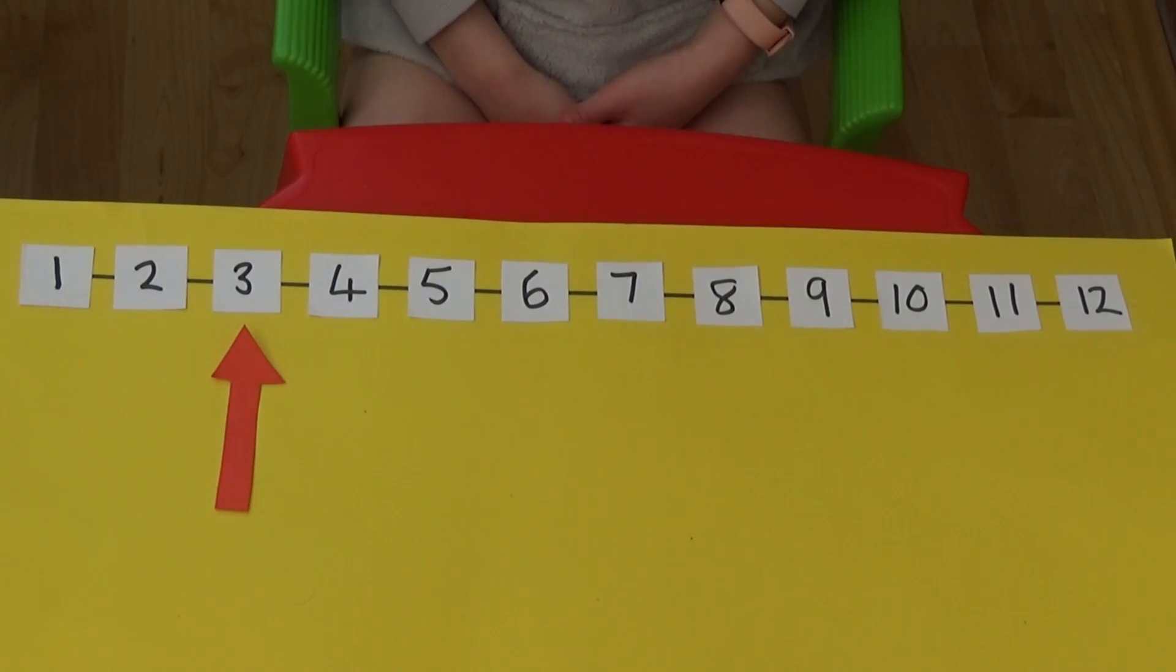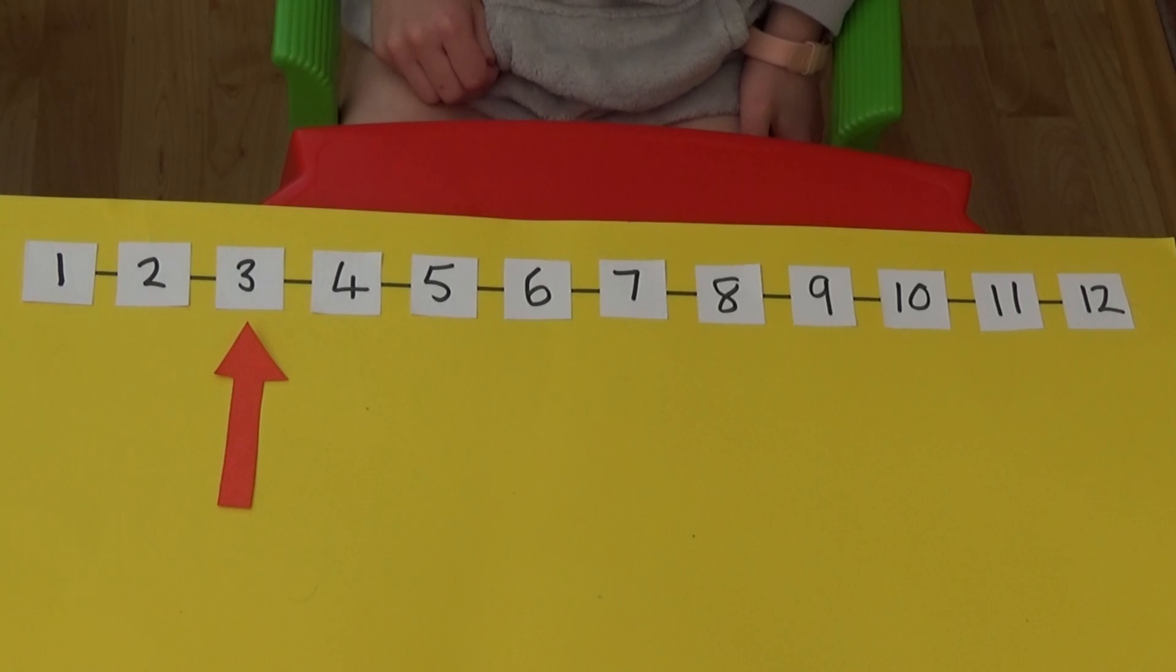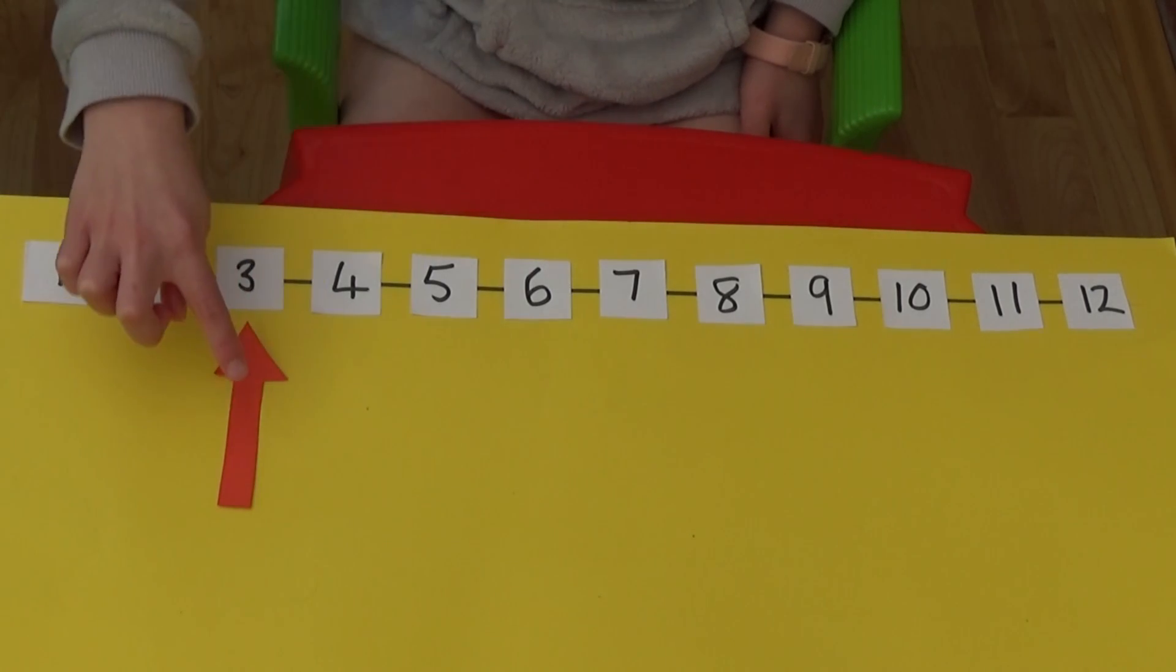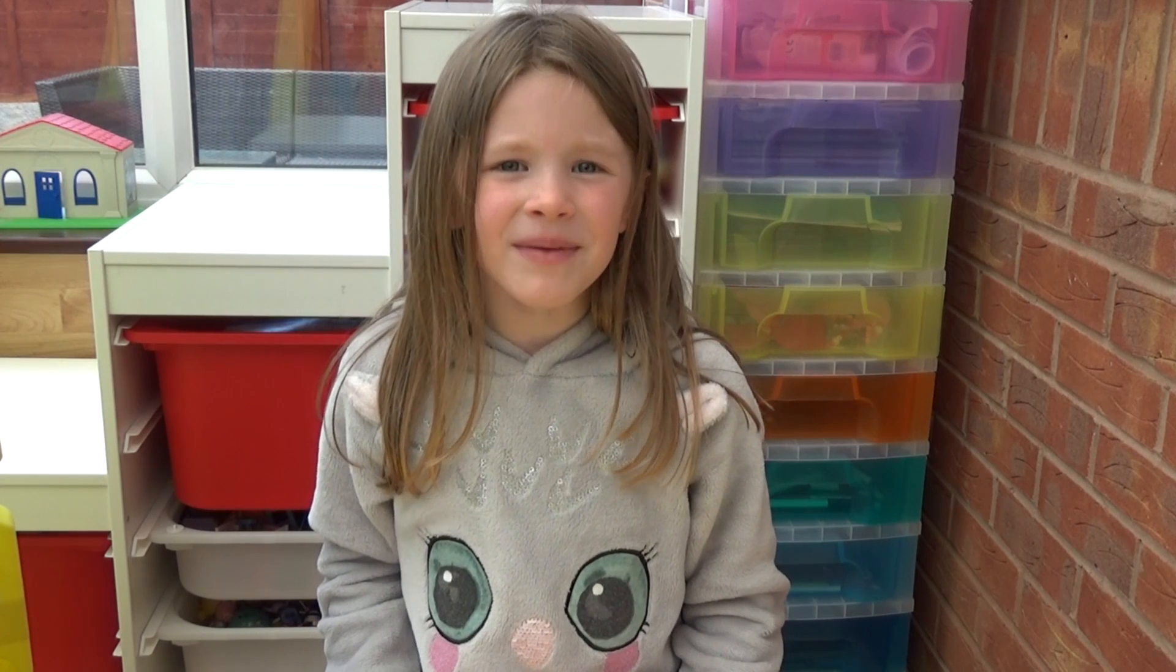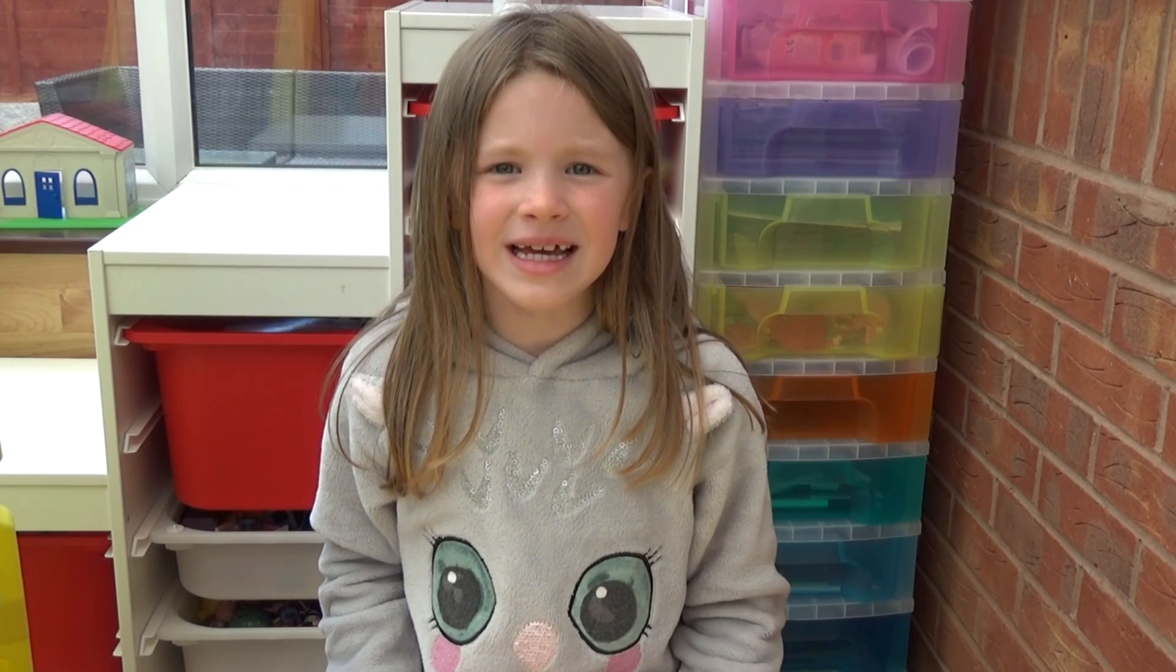Before we look at the hours in a circle we're going to look at them on a number line. On a clock the arrows are called hands, this arrow is representing the hour hand so I'm going to call it a hand not an arrow. When the hand points to a number it tells us how many hours it is.